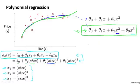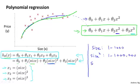I just want to point out one more thing, which is that if you choose your features like this, then feature scaling becomes increasingly important. So if the size of the house ranges from one to a thousand square feet, then the size squared of the house will range from one to one million, that's the square of a thousand.